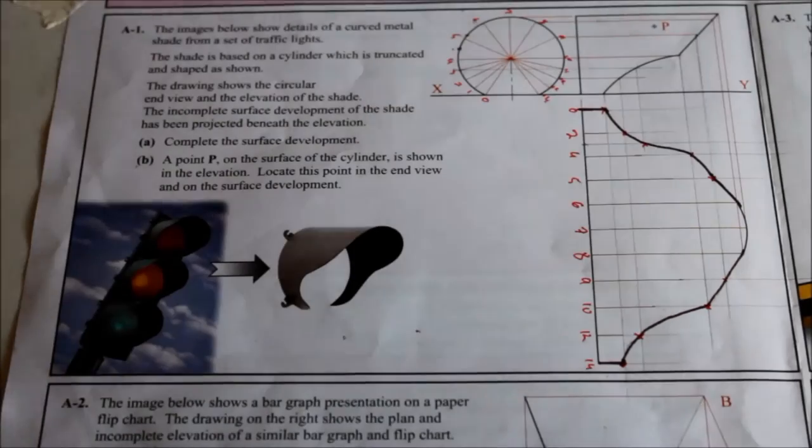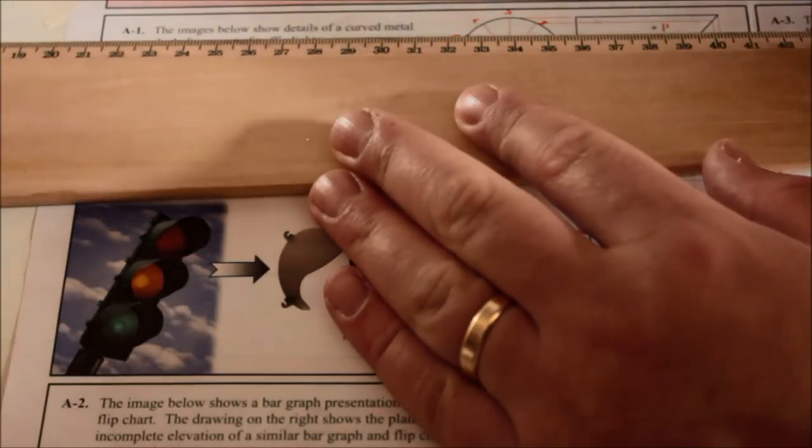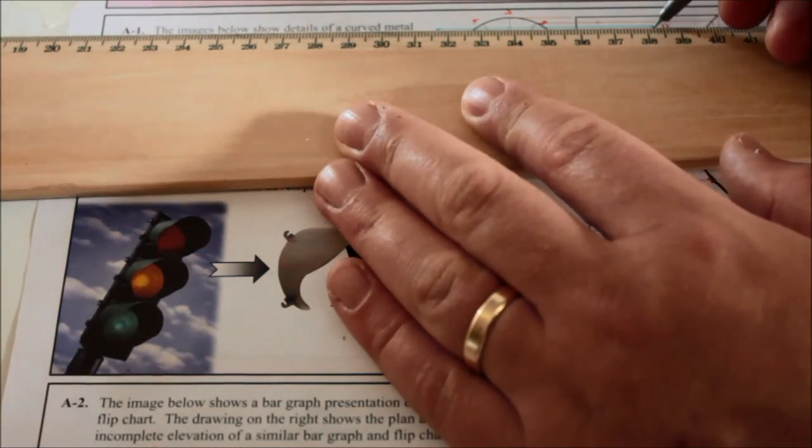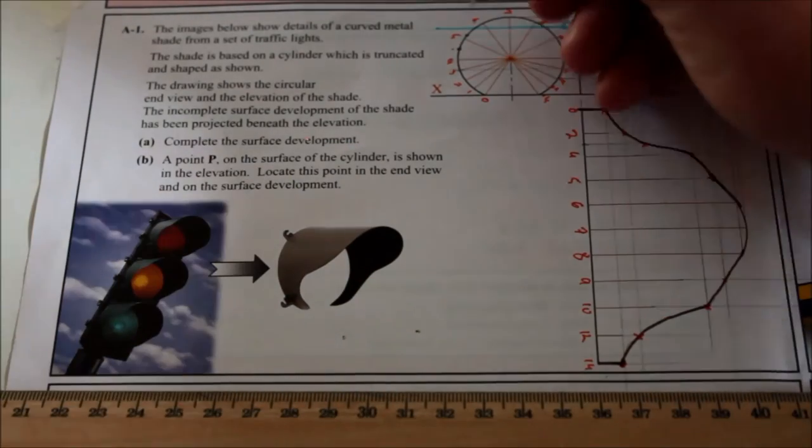It's kind of giving you the steps by which to find it. To find it in the end view, just project it over to the end view. It doesn't say whether it's in the front or the back, but we're assuming it's in the front because you can see it there. So between point B, and it's on the edge because it's on the surface, so point P has to be here.